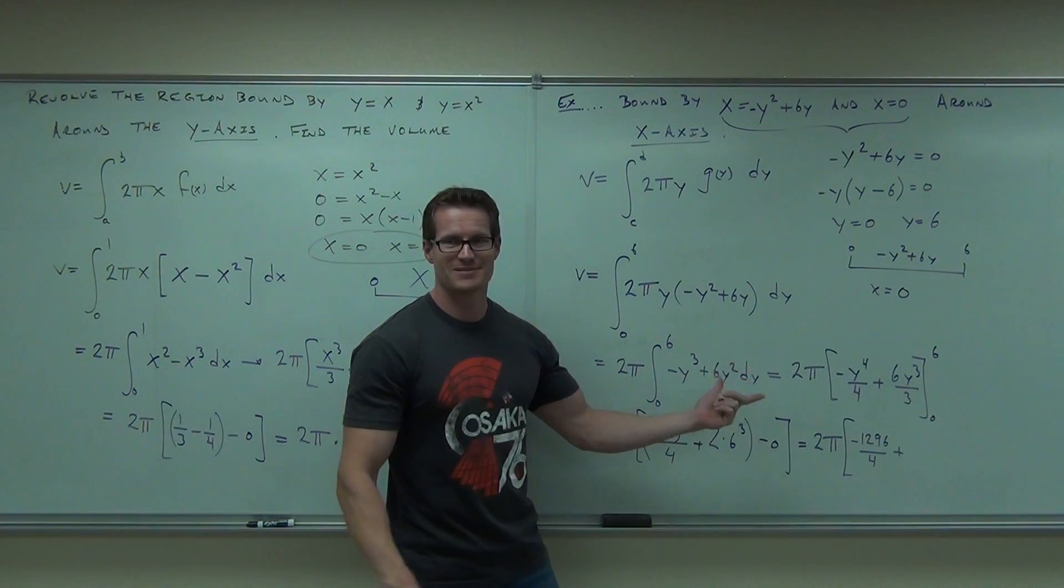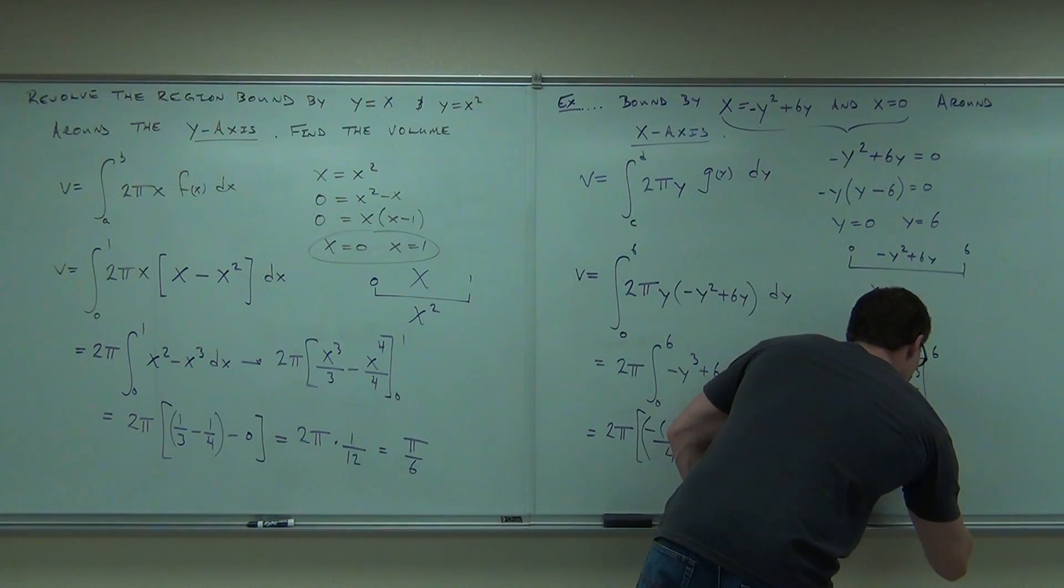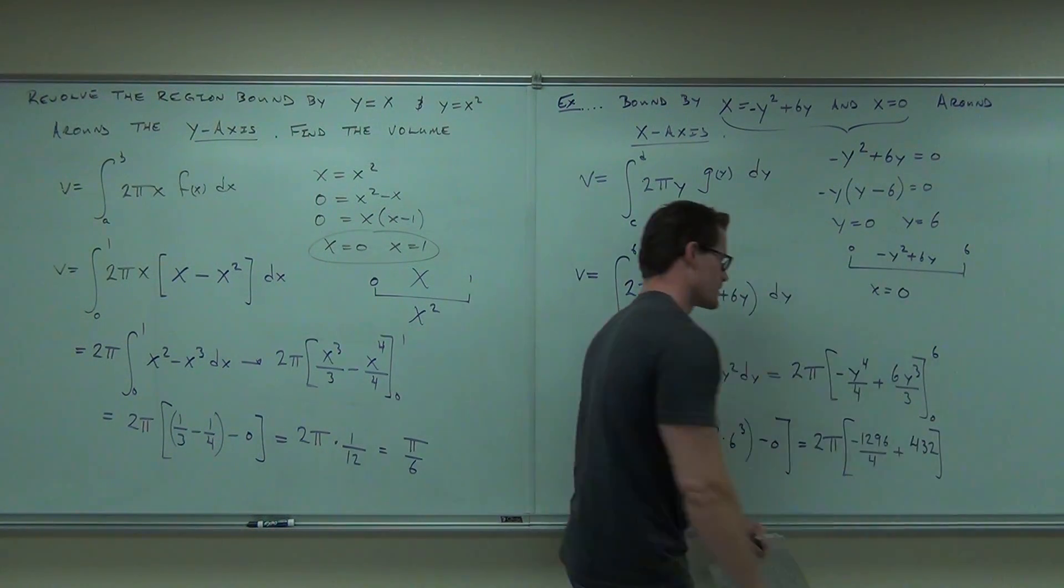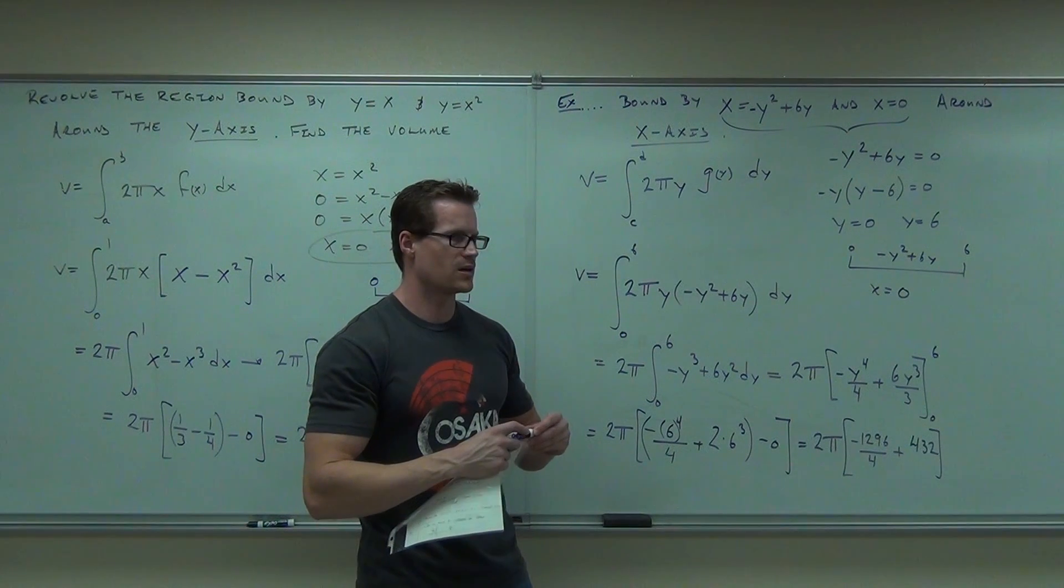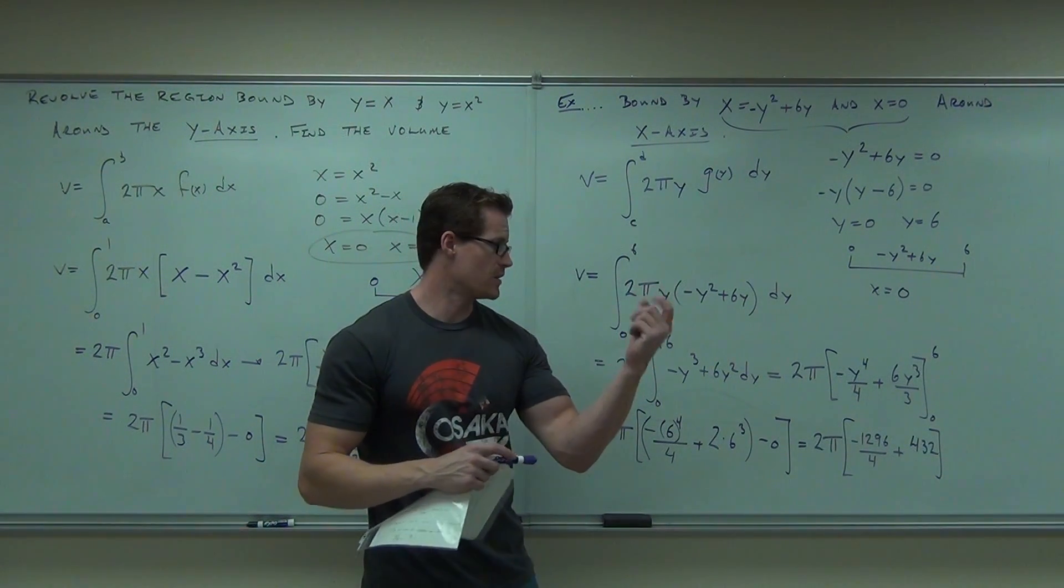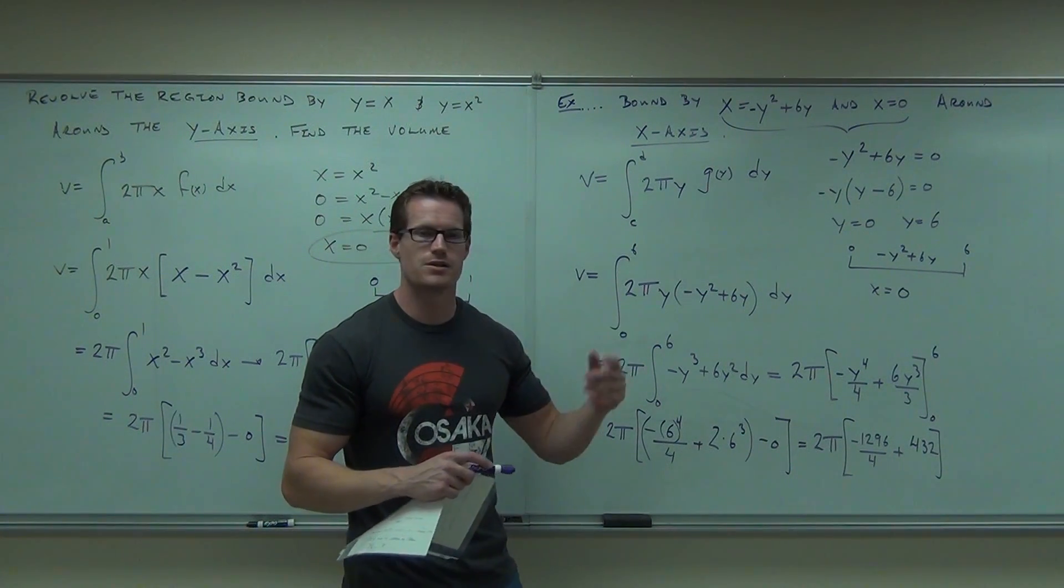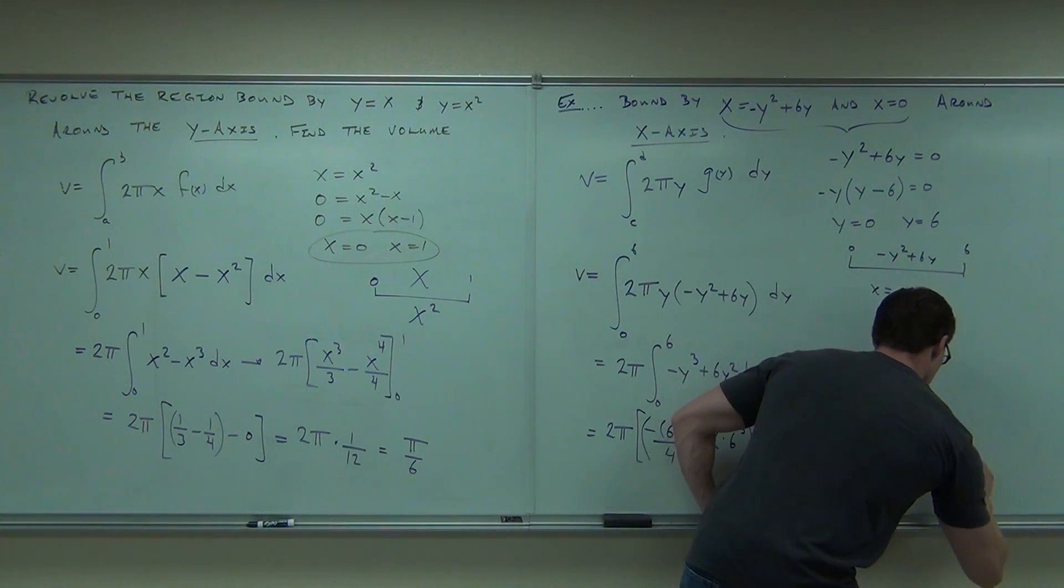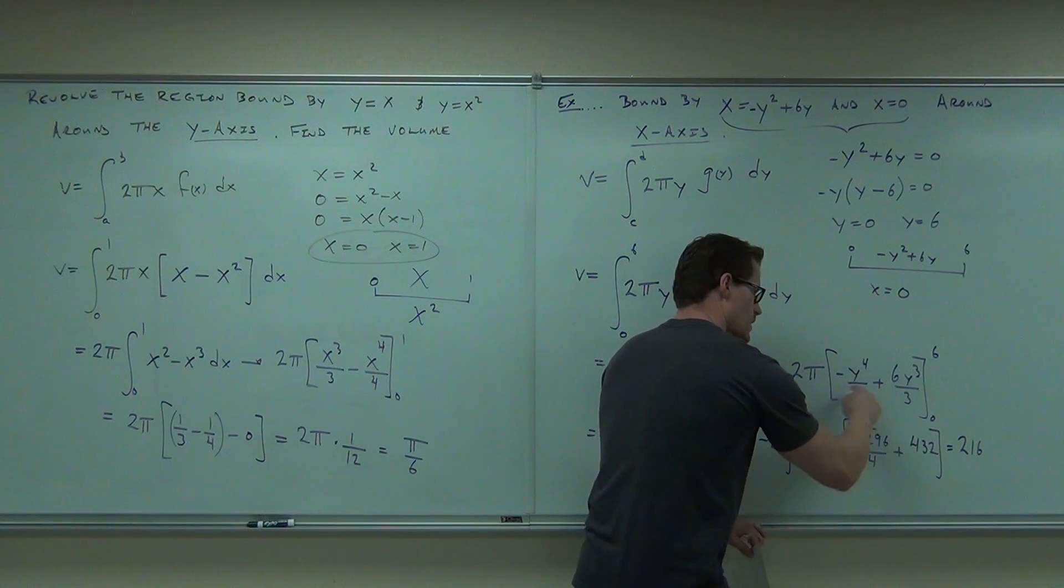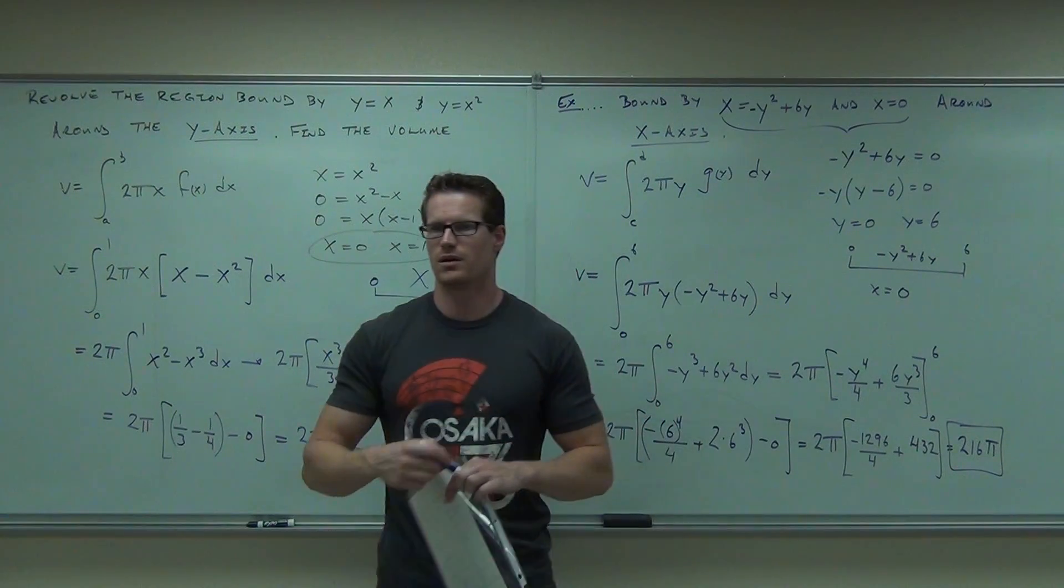So, 12,296 divided by three would be easier for me. Either way, whatever, six to the third, then times two. What do you get out of that? Now, I know 12,296 is divisible by four. It's like 300-something, isn't it? 324. So, when you combine those, the negative 324 and the positive 432, you get 108. So, all together, if you get 2π times 108,